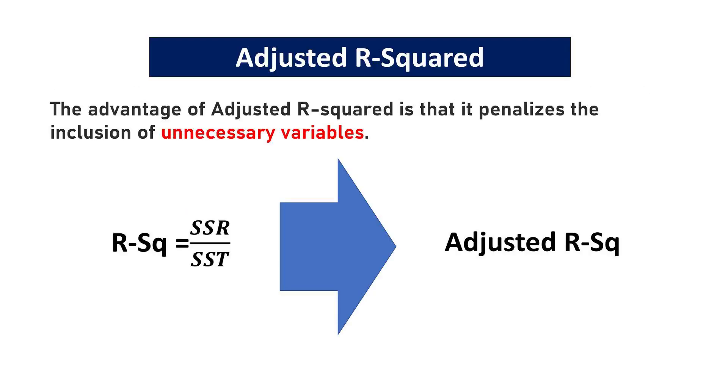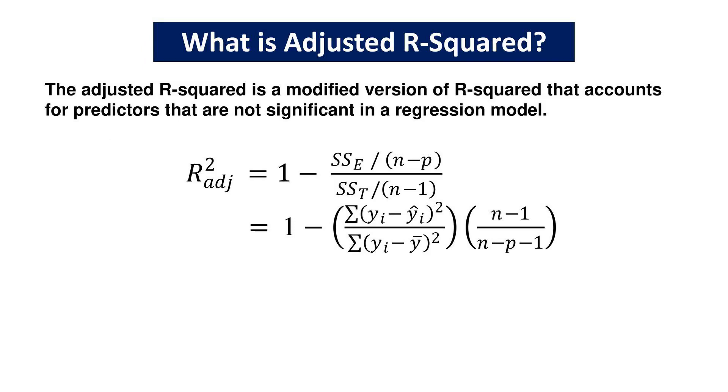Adjusted R-squared provides a more accurate measure of model fit by penalizing the inclusion of unnecessary predictors. Adjusted R-squared accounts for the number of predictors in the model, providing a more realistic measure of how well the model fits the data.